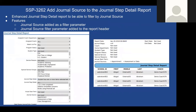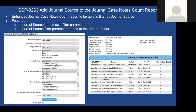We've added to the journal step details report the ability to further filter on journal step details by adding a journal source filter — so you can find journal step details set by appointment, for example. We've also added the selected filter to the header at the top of the report. The same enhancement was applied to the journal case notes count report, where you can also filter by journal source, with the selection displayed in the report header.